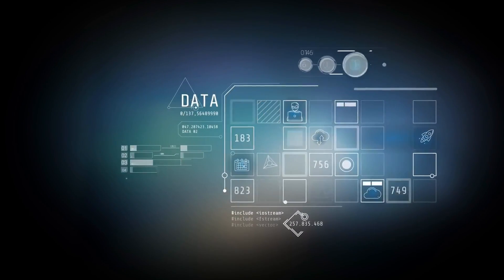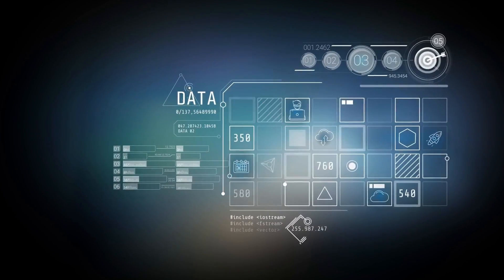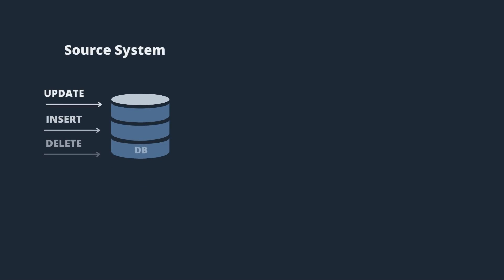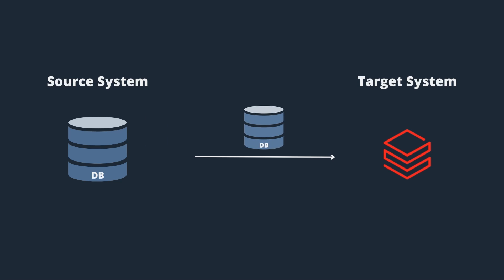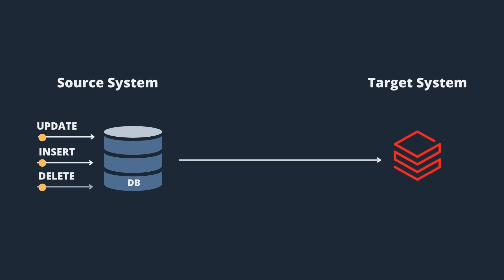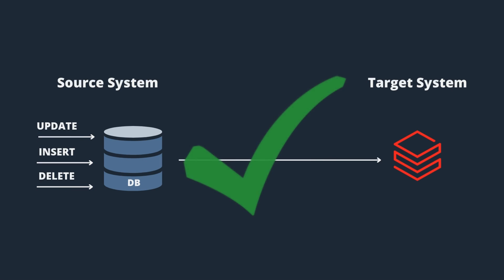The first step in every unified data platform is ingesting data from different source systems. One key data source is often a relational database such as Postgres or SQL Server, where you need to pull data and load it into your target analytical system such as Databricks. Due to performance and real-time requirements, you don't want to load a full snapshot multiple times per day. Instead, you want to incrementally ingest only the changes from the source database.